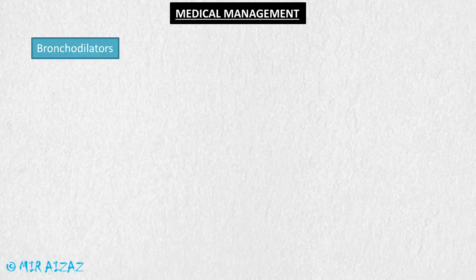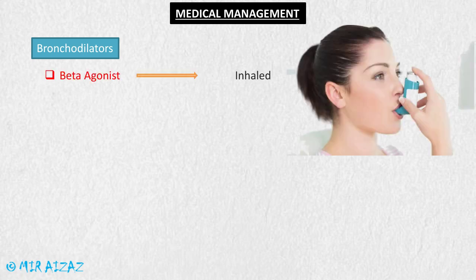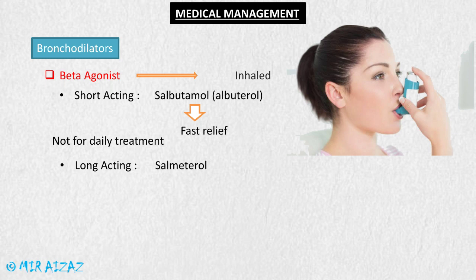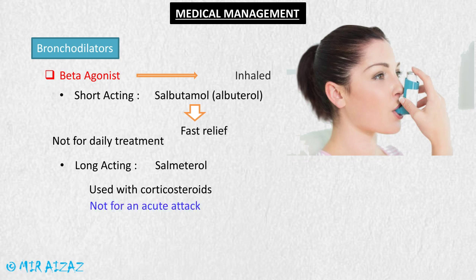Bronchodilators are medications which dilate inflamed bronchioles and ease breathing. The first class is beta agonists, taken in inhaled form. Short-acting beta agonists include salbutamol, which acts very quickly and is used in asthma attacks — not for daily treatment. Long-acting beta agonists are used on a long-term basis, usually in combination with a corticosteroid, and are not used for acute asthma attacks. Side effects of beta agonists include increased heart rate and nervousness.